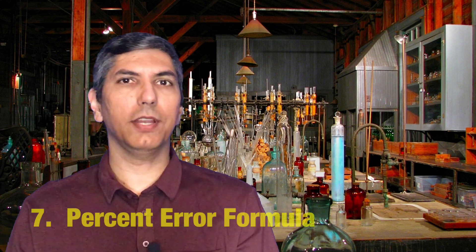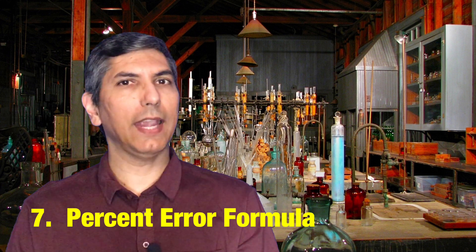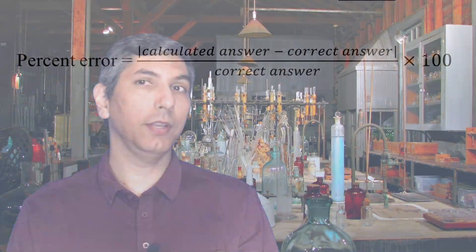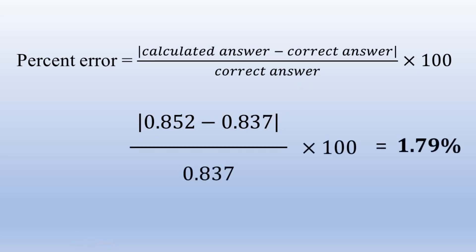Number seven: percent error formula. You're expected to know how to calculate the percent error of a calculation given the calculated answer and the right answer. They don't tell you how to do that on the equation packet, so you have to know this ahead of time. Percent error is equal to the absolute value of the calculated answer minus the correct answer, all over the right answer, times 100. For example, if the accepted value is 0.837 grams and the calculated value is 0.852 grams, then the error is 1.79 percent. That equation is not on the equation sheet, so you have to learn it.